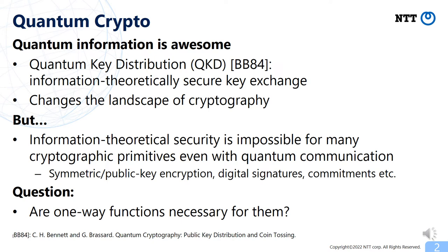After the invention of quantum key distribution, people expected that quantum communication can also be used to achieve information-theoretic security for other cryptographic primitives. Unfortunately, however, it turns out that information-theoretic security is impossible even with quantum communication for many cryptographic primitives, including symmetric and public key encryption, digital signatures, and commitments.